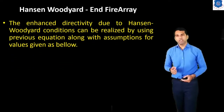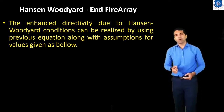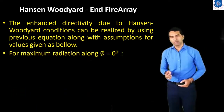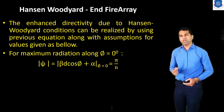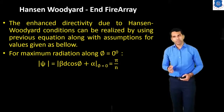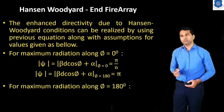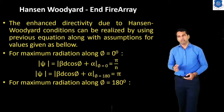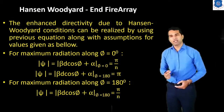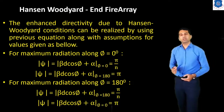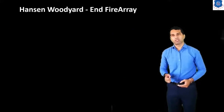The enhanced directivity due to the Hansen-Woodyard condition can be realized using the previous equation along with the following assumptions. For maximum radiation along phi equals zero degrees, the condition is psi equals beta-d·cos(phi) plus alpha at phi equals zero, equal to pi over N; and psi at phi equals 180 degrees equal to pi. For maximum at phi equals 180 degrees, psi at phi equals 180 degrees equals pi over N, and psi at phi equals zero equals pi.